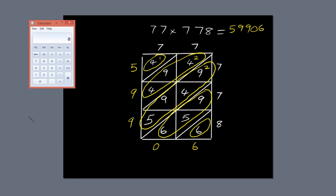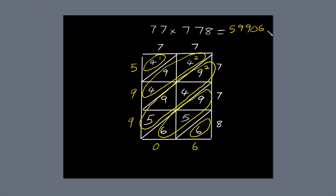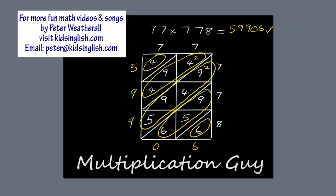I'm going to check the answer on my calculator, but I'm allowed to do that because I'm not living in the Stone Age. 77 times 778 equals 59,906. So the answer's correct. That's why they call me the Multiplication Guy. Bye.